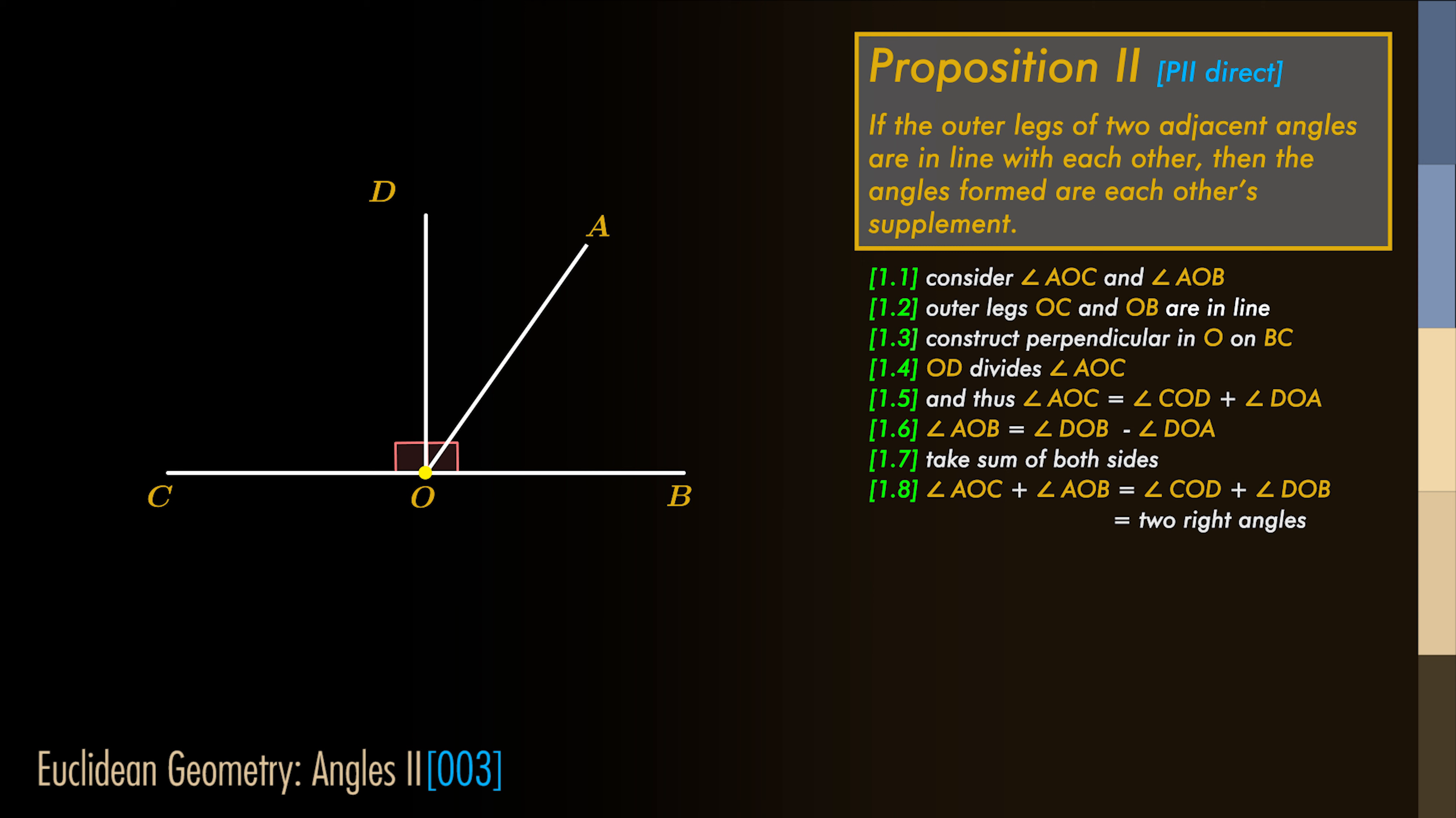But COD and DOB are right angles. So the sum is two right angles. And with that we have proven the proposition.